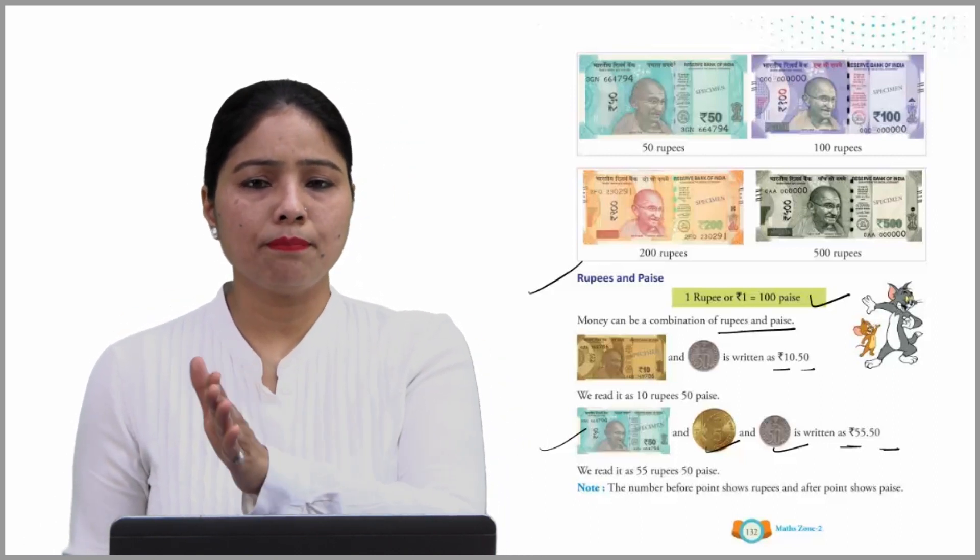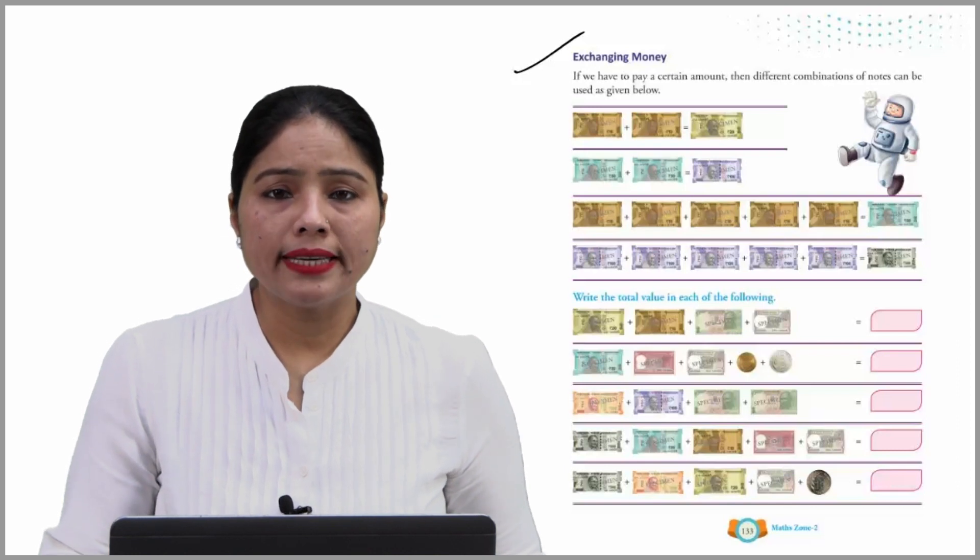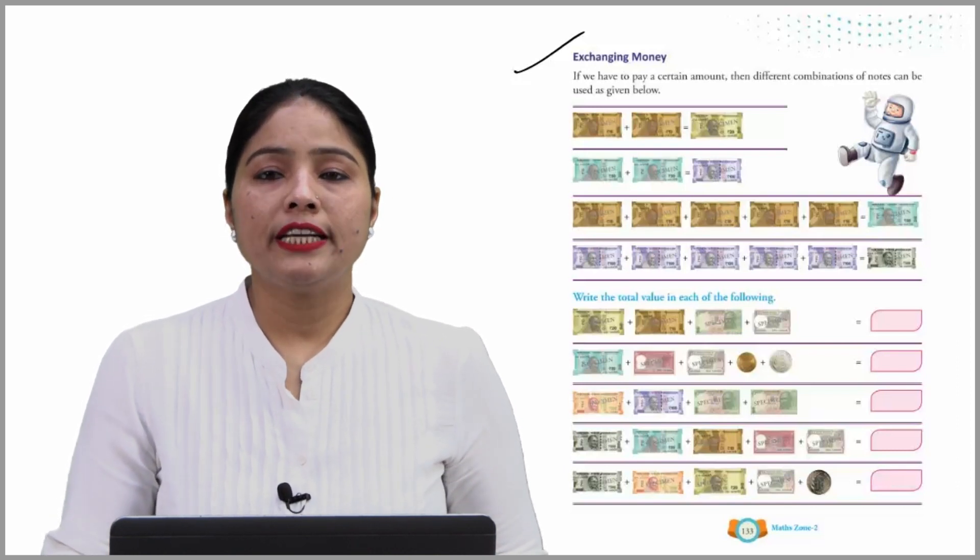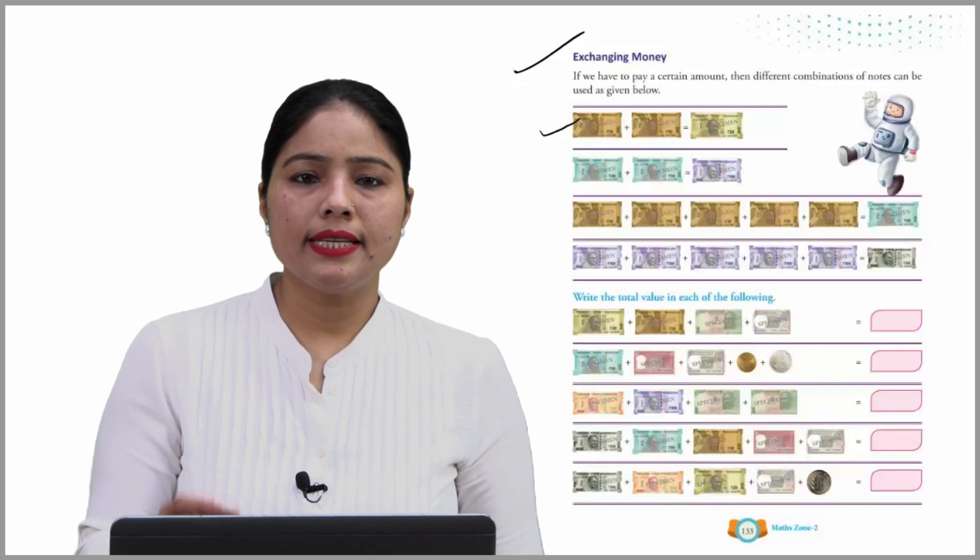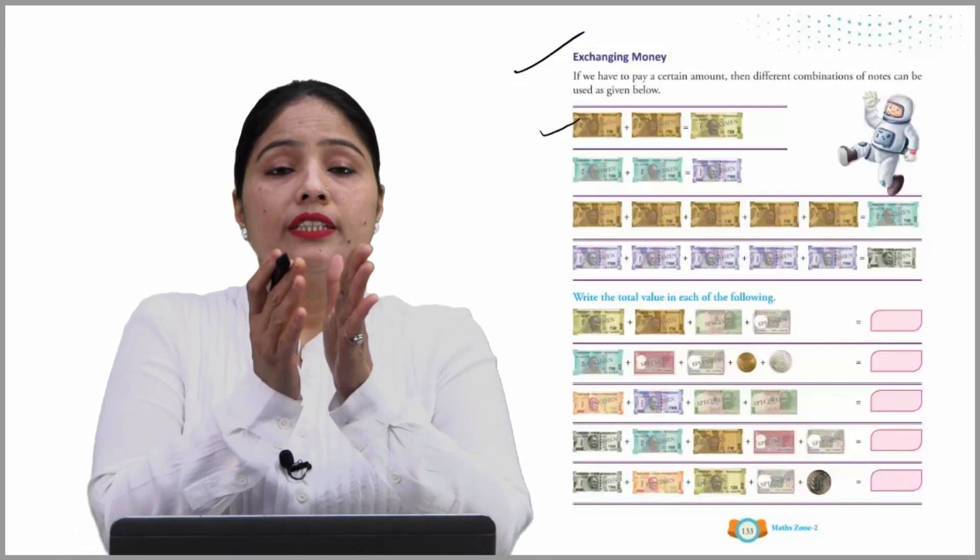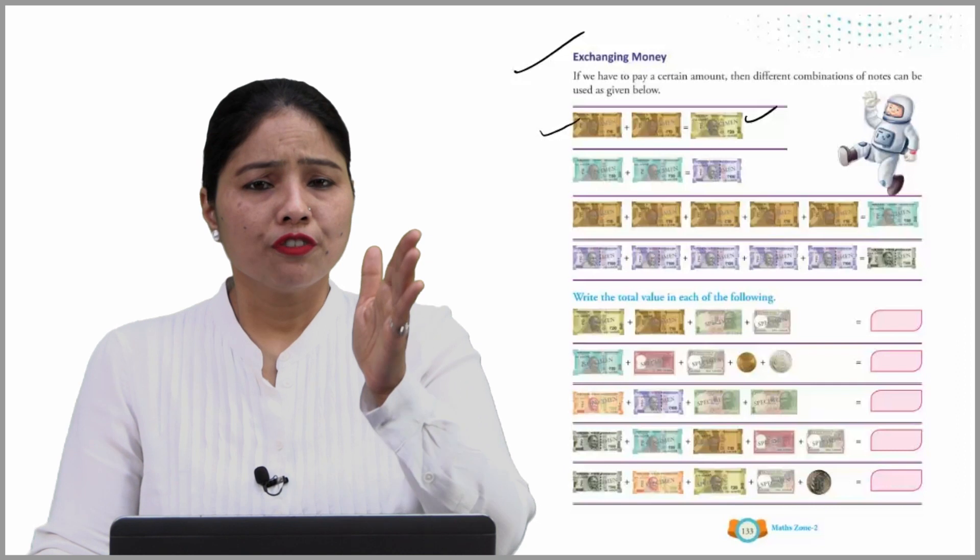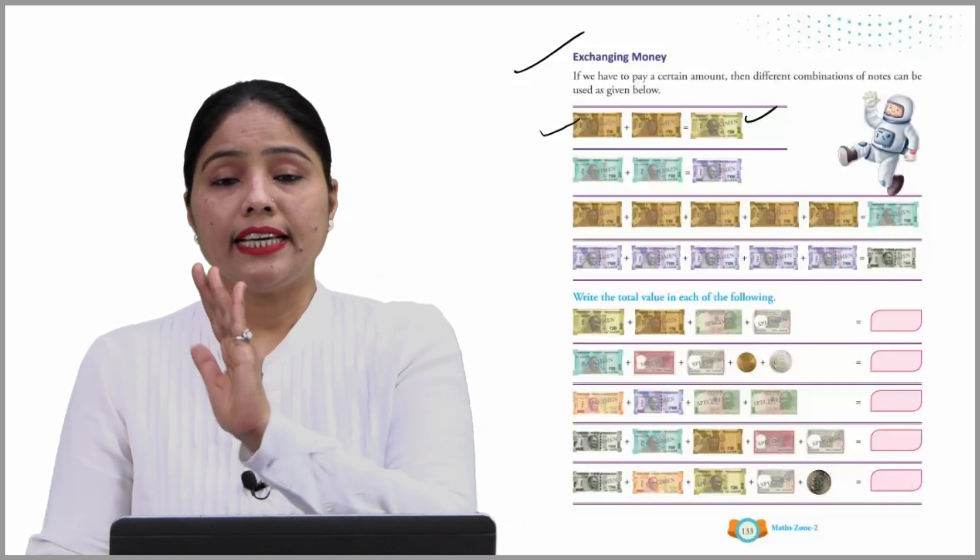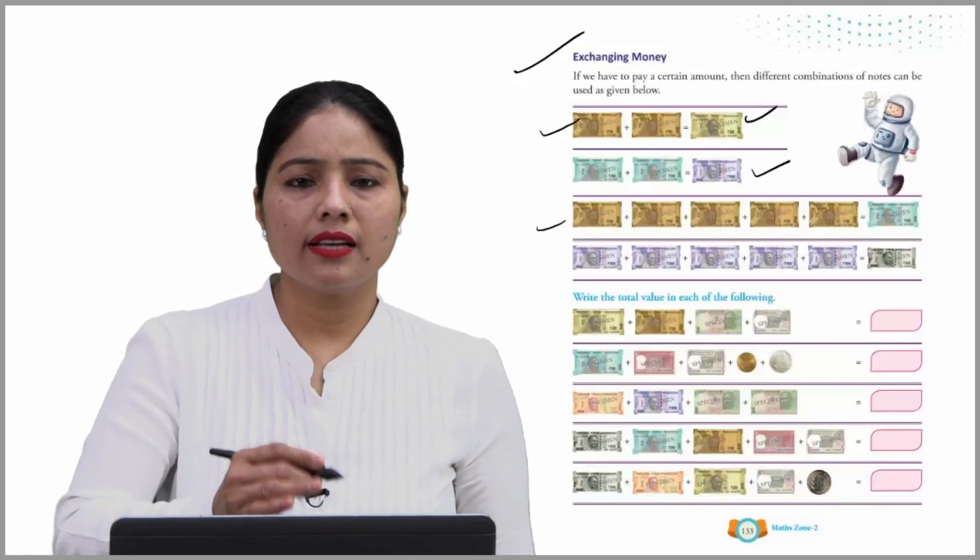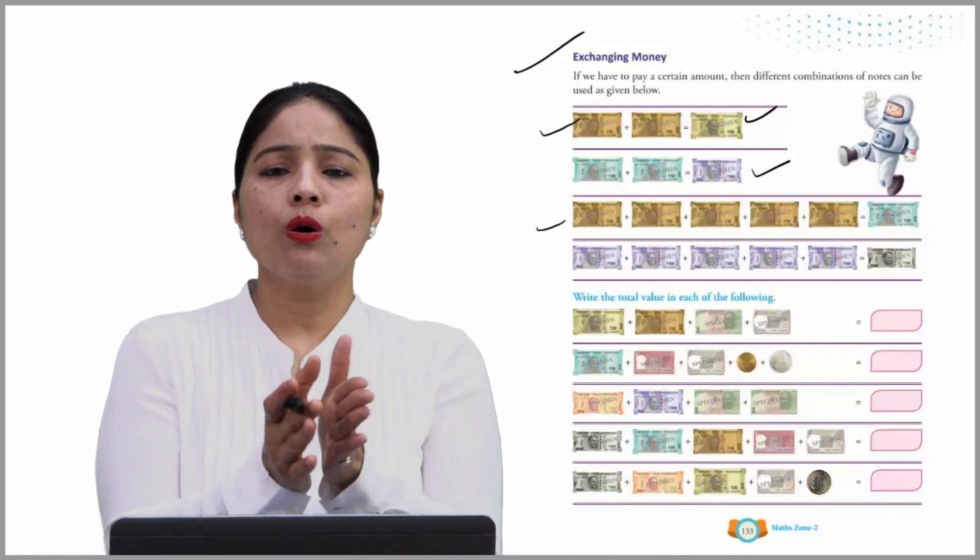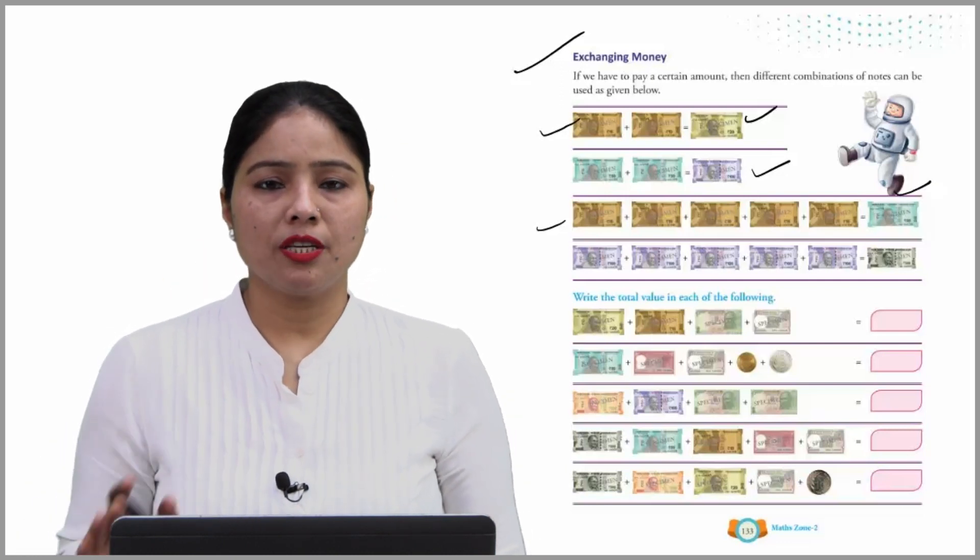Exchanging money. If we have to pay a certain amount, then different combinations of notes can be used. How? This is 10 rupees plus 10 rupees equals 20, so this is 20 rupees note. Similarly, 50 rupees plus 50 rupees equals 100 rupees note.